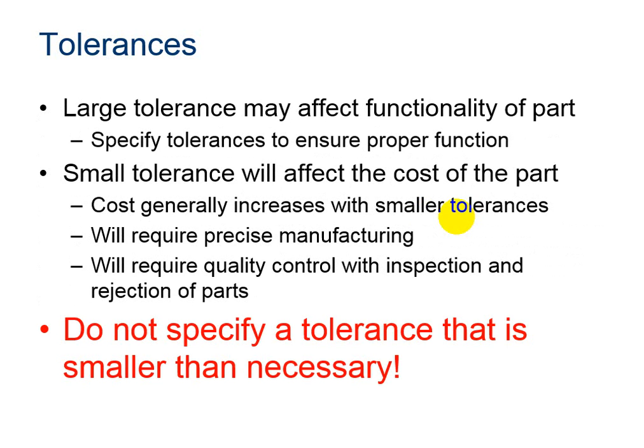Before we look at some examples, let's discuss how do you decide the amount of tolerance. Without tolerances, copies of individual parts could vary significantly, disallowing the use of a part because it does not fit or operate properly within an assembly. A large tolerance may affect functionality of the part. However, small tolerances generally increase the cost of manufacturing and sometimes will make it too costly to sell the part. So do not specify a tolerance that is smaller than necessary.